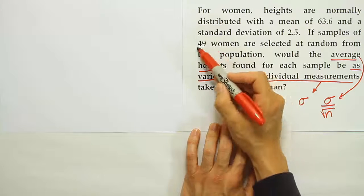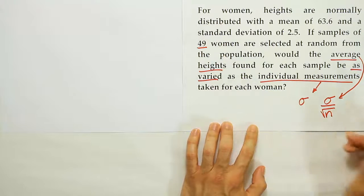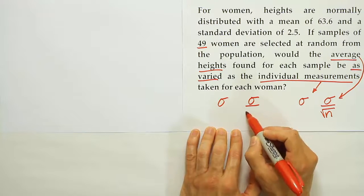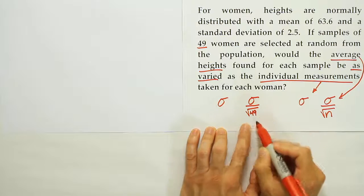In this case, since there are 49 women in the samples, we would have a comparison of sigma compared to sigma over the square root of 49, or in other words, 7.